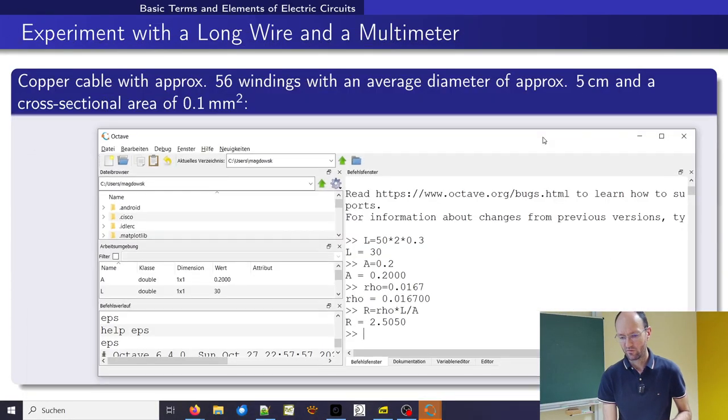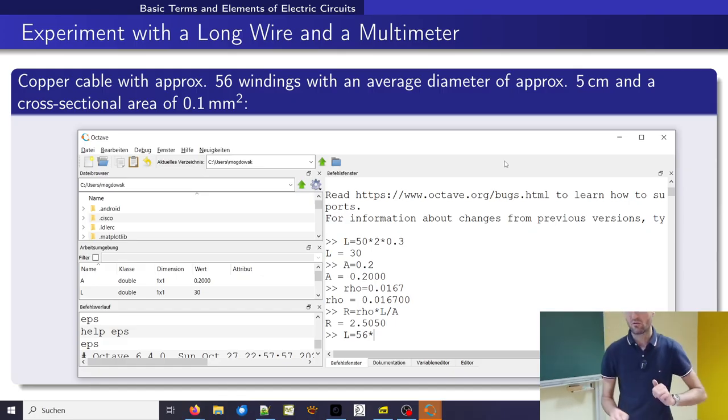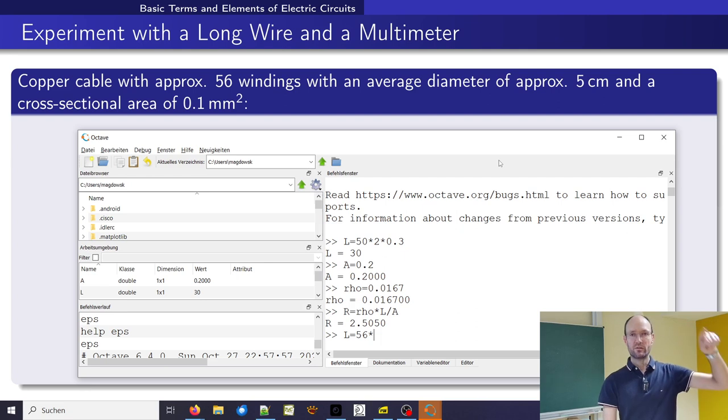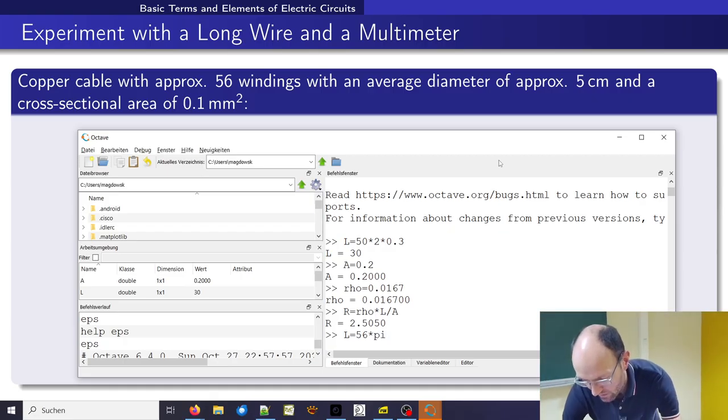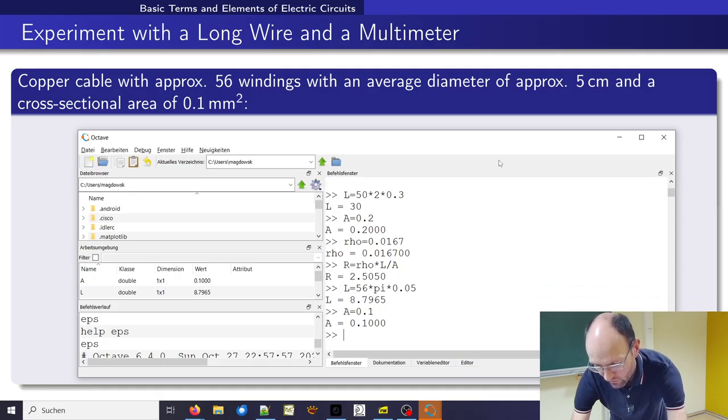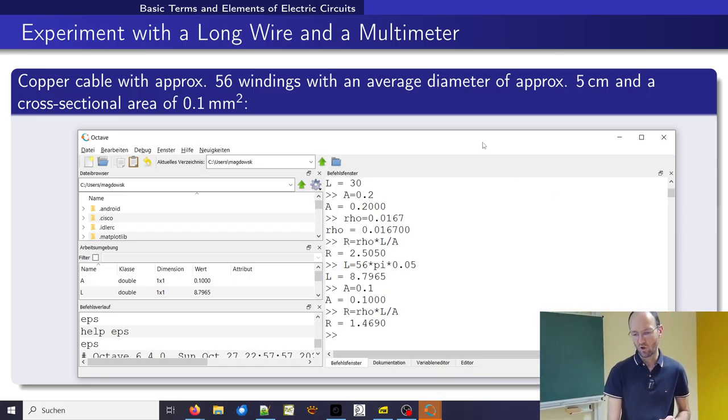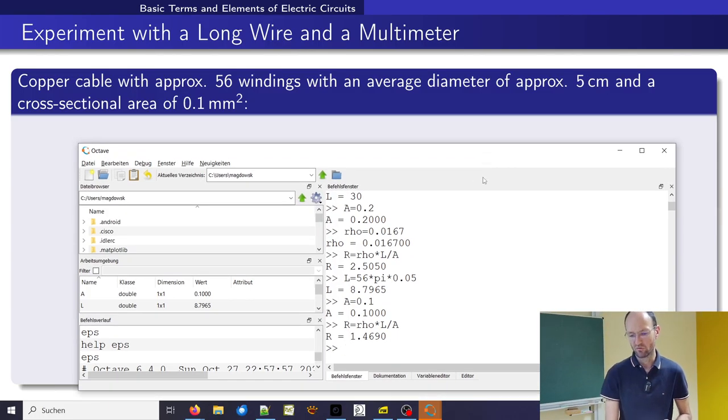If we try to do the very same calculation once again. So now it's also copper, but the length is 56 times. So how can we calculate the circumference from the diameter? Pi times 0.05, 5 centimeter in meters. So we get this length and the cross section area is not 0.2, but just 0.1. And so if we calculate R once again, we get 1.47, something like this.